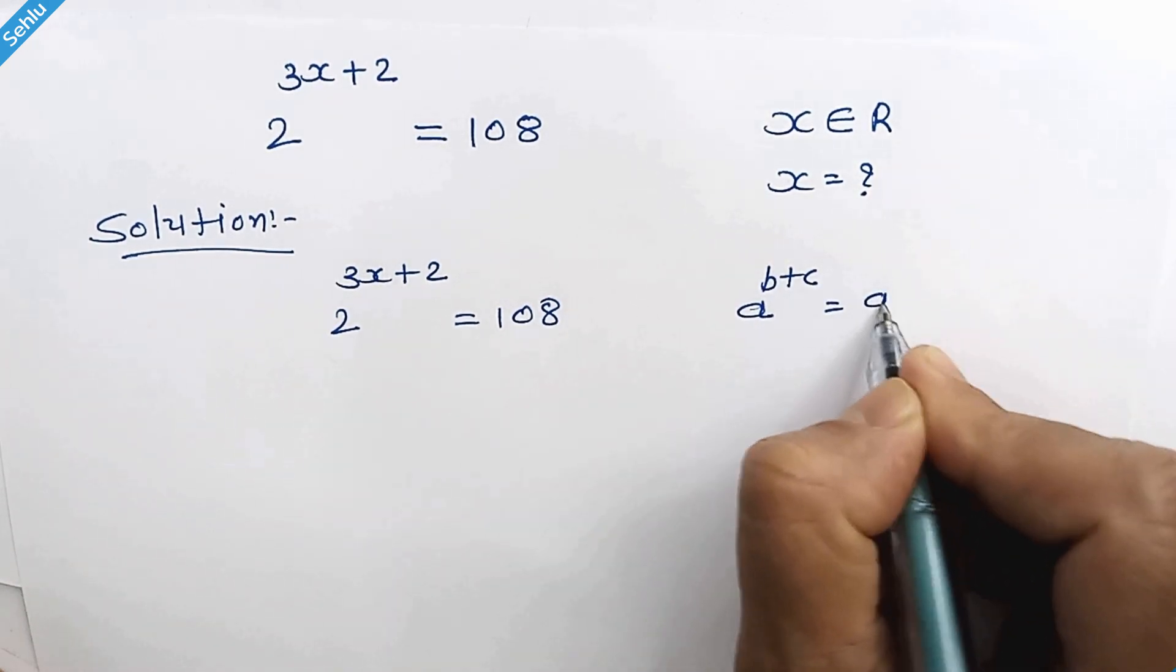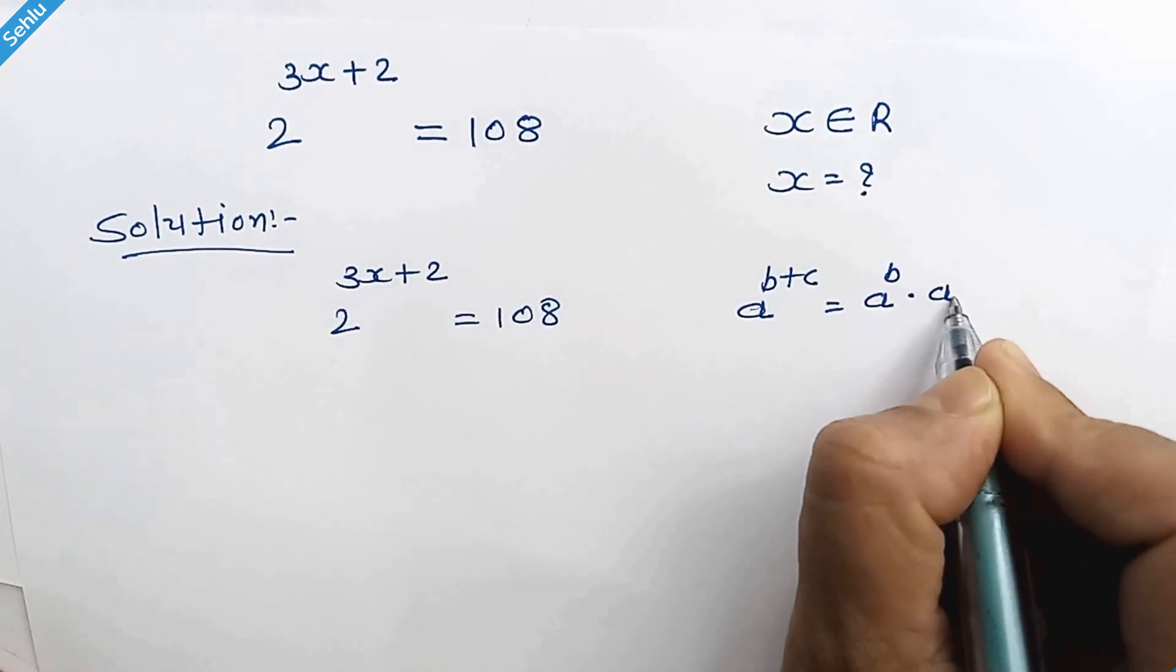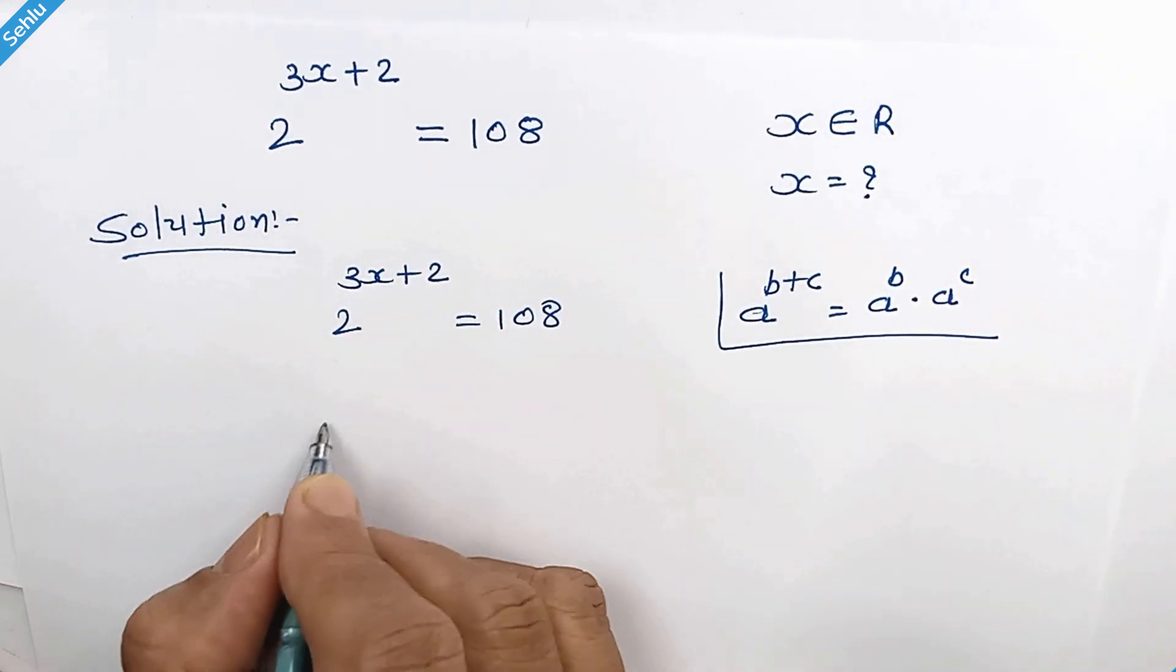So this part can be written as 2 to the power 3x times 2 to the power 2.